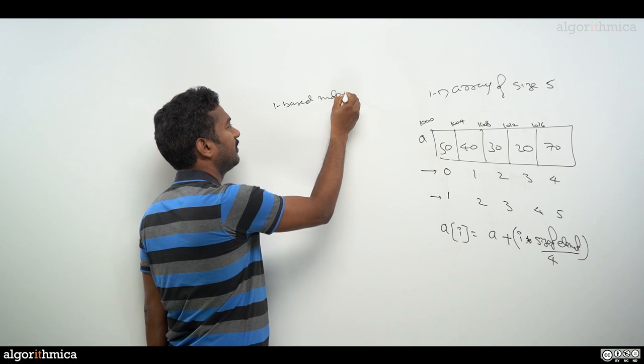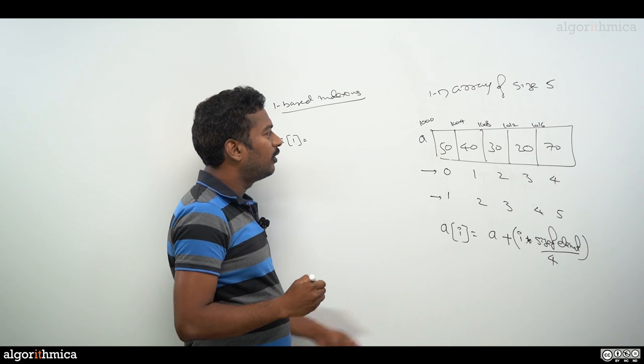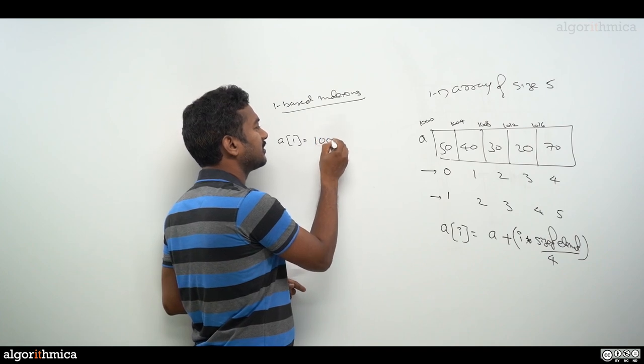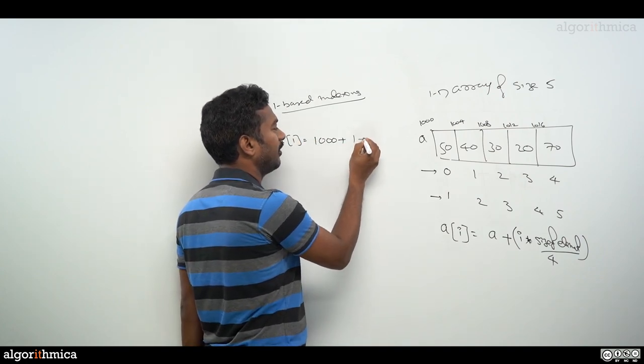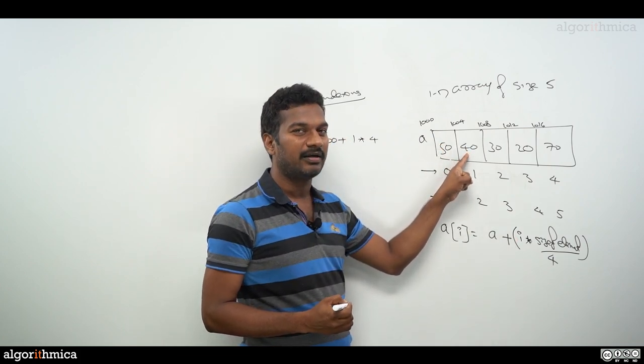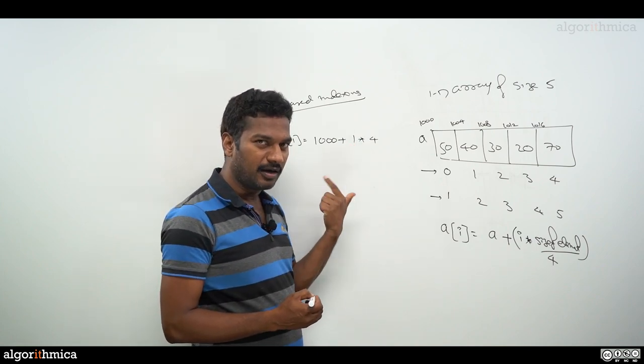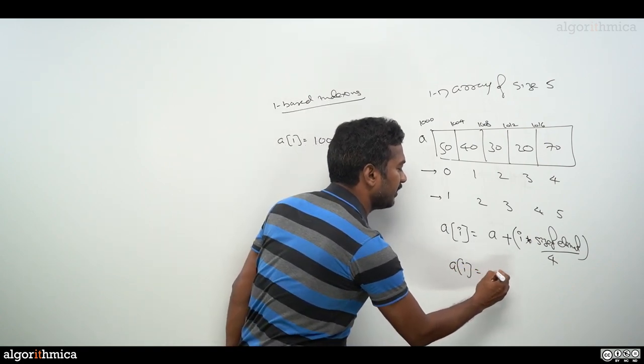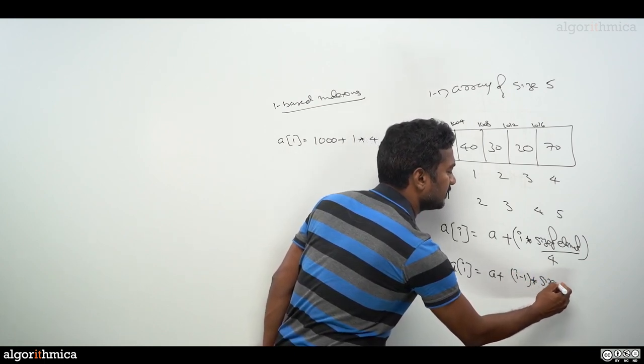One-based indexing: let's access A[1]. We know that A[1] is this element. I want to get this address. If you follow this, A is the starting address, 1000, plus if we substitute i, in this case i is 1, 1 * 4. What is happening here is we are really going beyond this element. But if we want this element to be accessed, that means you cannot multiply by i. That means for one-based indexing, this formula has to be modified. The formula is A + (i - 1) * size of element.